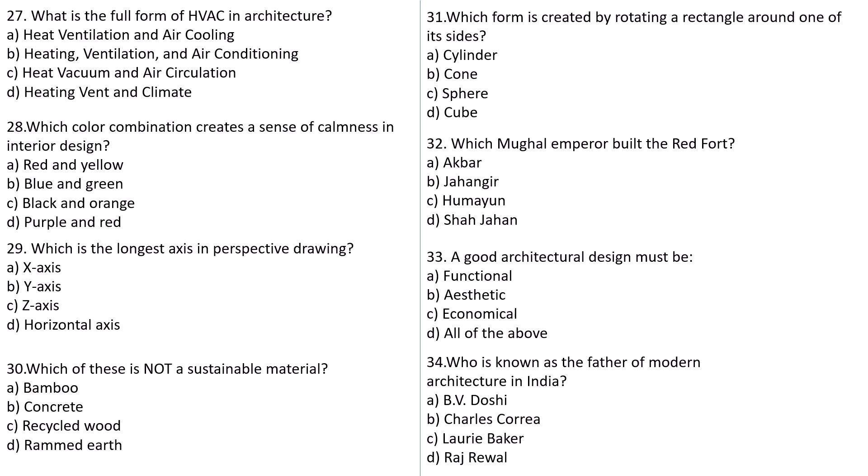Question number 27: What is the full form of HVAC in architecture? Options: A: Heat, Ventilation and Air Cooling. B: Heating, Ventilation and Air Conditioning. C: Heat, Vacuum and Air Circulation. D: Heating, Vent and Climate. The correct answer is B — Heating, Ventilation and Air Conditioning. Question number 28: Which color combination creates a sense of calmness in interior design? Red and yellow, Blue and green, Black and orange, or Purple and red. The answer is blue and green.